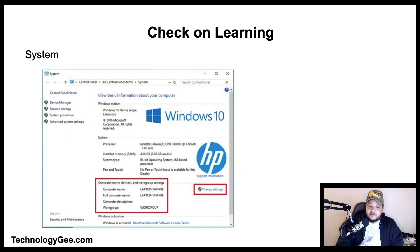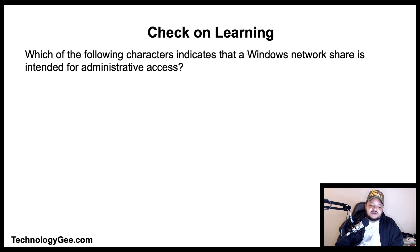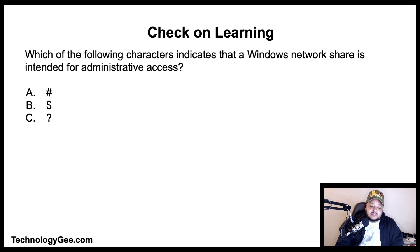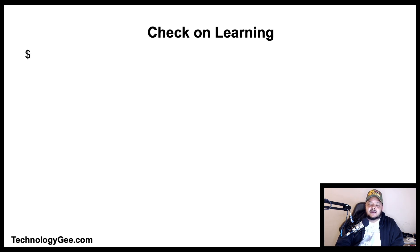Question two: which of the following characters indicates that a Windows network share is intended for administrative access — is it the pound/hashtag symbol, the dollar sign, the question mark, or the ampersand symbol? The correct answer is the dollar sign.